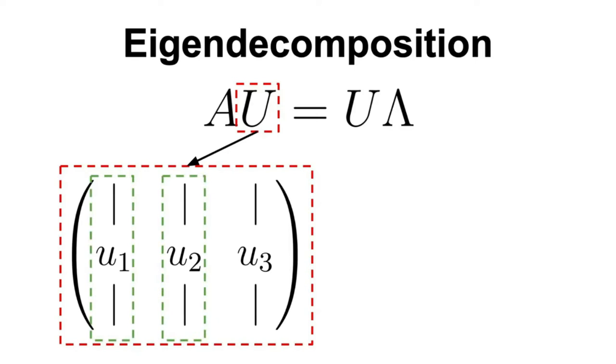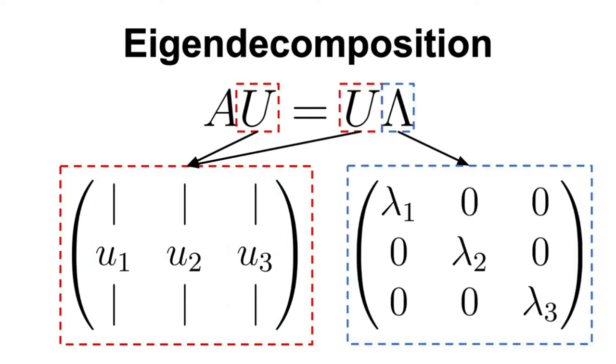Thus, a natural question arises: How can we factorize any matrix, not just the subset of square matrices? Well, that's where the Singular Value Decomposition, or SVD in short, comes into play, which can be used to factorize any rectangular matrix, not just square matrices.